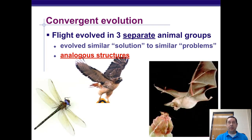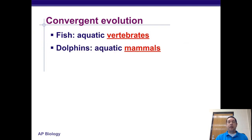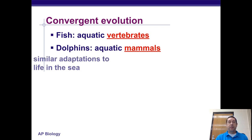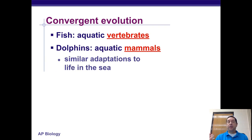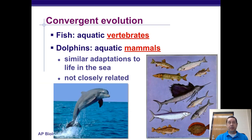Insects, birds, and bats can all fly, but they have very different structures to their wings. Another example is the body shape of certain predatory organisms that live in the ocean — fish and dolphins have similar adaptations to life in the sea, but they are not closely related, despite having similar body structures.